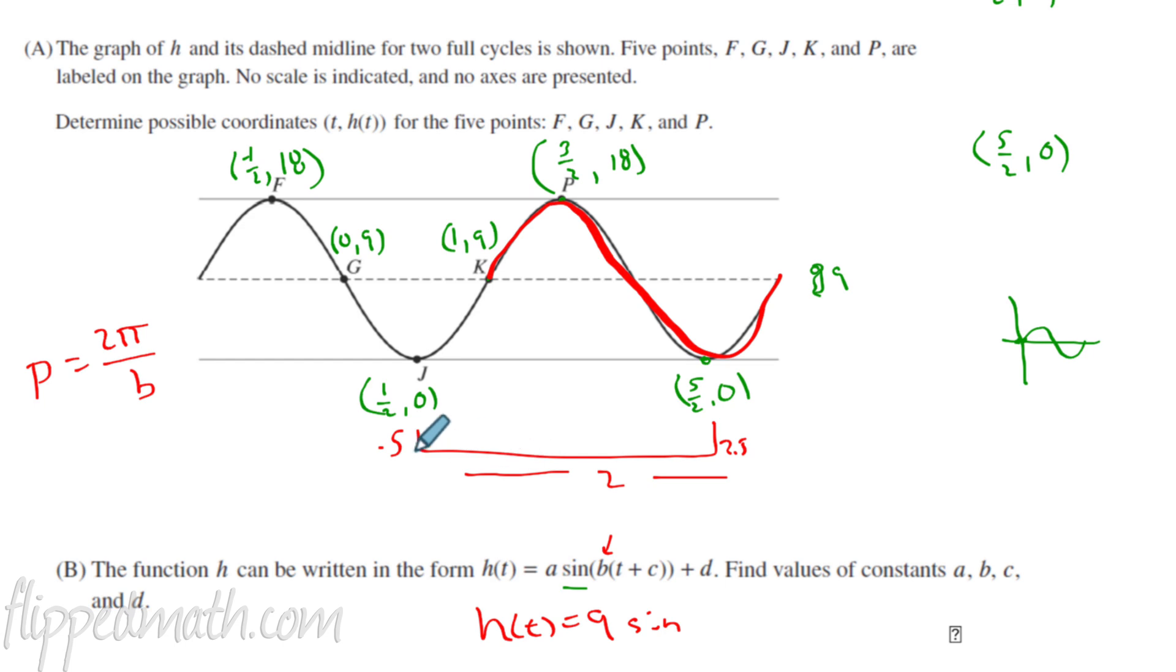So that's what the period is. So when we go to find B, we have to use the period, which is a distance of two, in our little equation here. So two equals two pi over B, because we know that the period equals two pi over B. So now what? I'll cross multiply. We get two B equals two pi. If I divide both sides by two, I get B equal pi. How about that? So back to my equation. The value of B is pi.